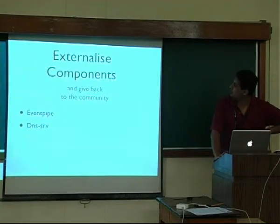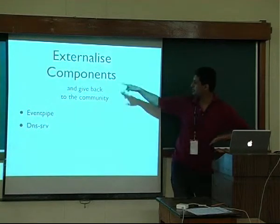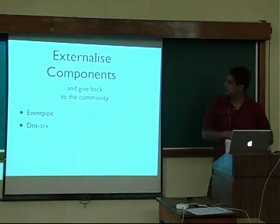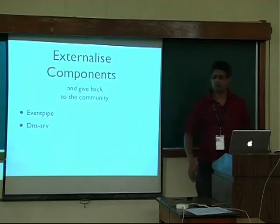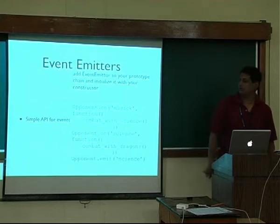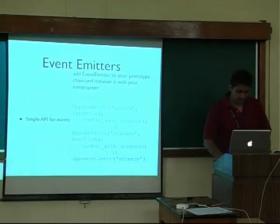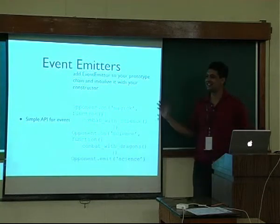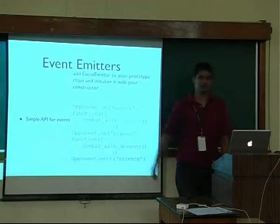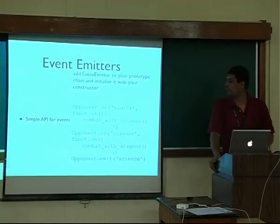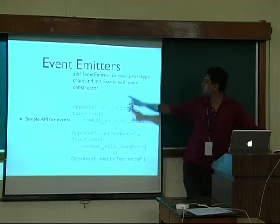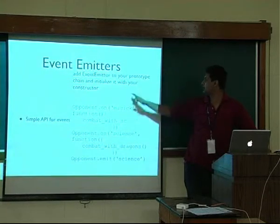One thing we also decided to do was externalize components and give back to the community. For example, we pulled out something called the event pipe, which really had nothing to do with node-xmpp-bosh by itself, but was something we were using — might as well make it available. Event emitters are really nice. If you talk to anybody about Node.js, this is one of the things that will come up early. The API is really beautiful, it's got a simple API for events, and it's built into the language, it's part of Node.js almost.